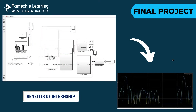For the internship user, you will get 5 to 6 projects. This is the final project of electric vehicle — you will make an EV half car model. This is the simulation model and this is the output of the EV half car model. This is your final project.